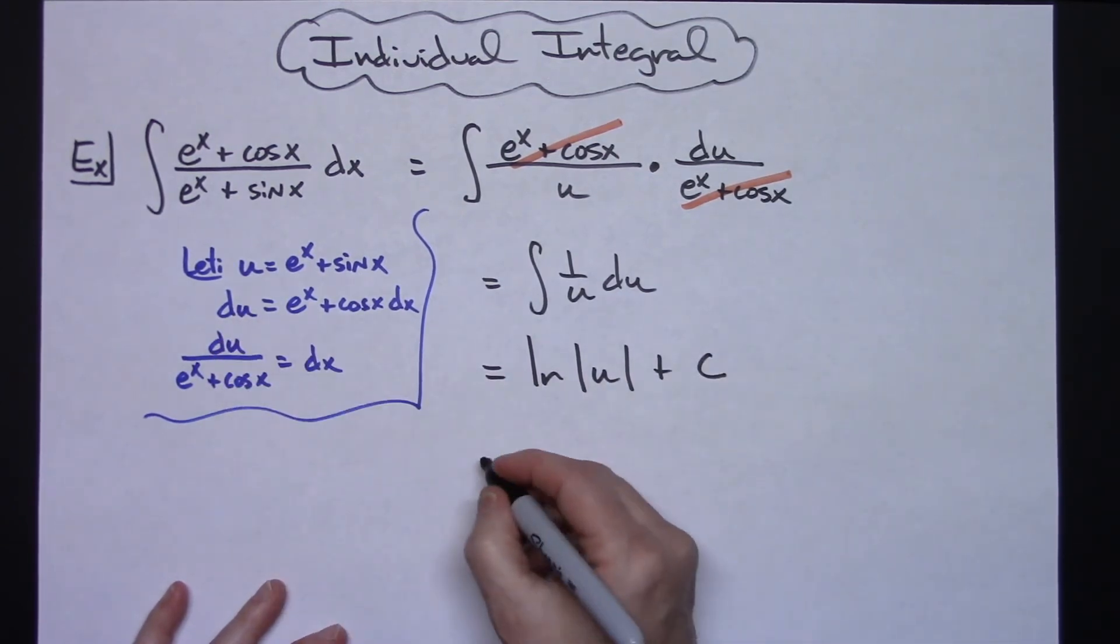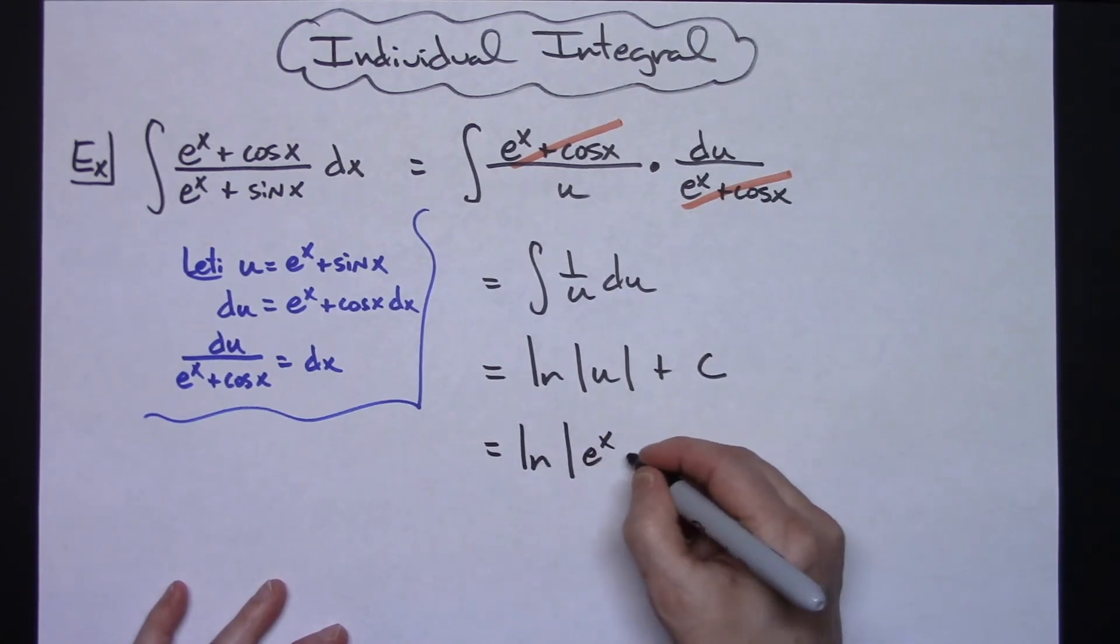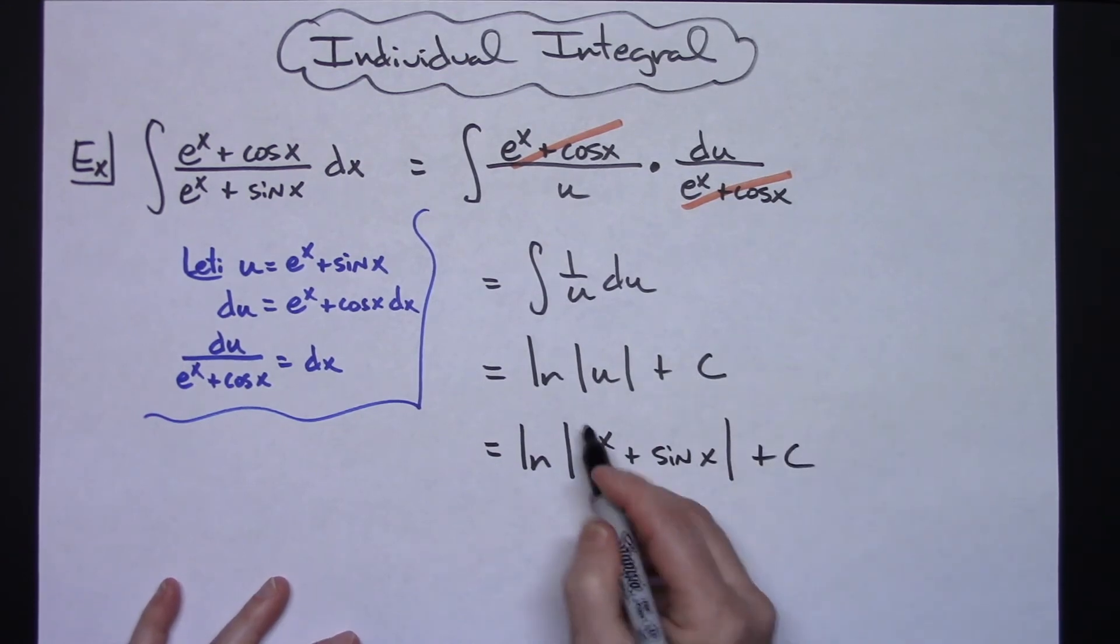So putting that u back in, we'll have natural log absolute value e to the x plus sine x, and then plus c for our final answer.